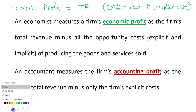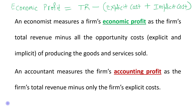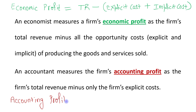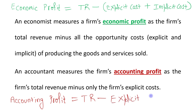Now let's talk about Accounting Profit. It is Total Revenue minus only the Explicit Cost.